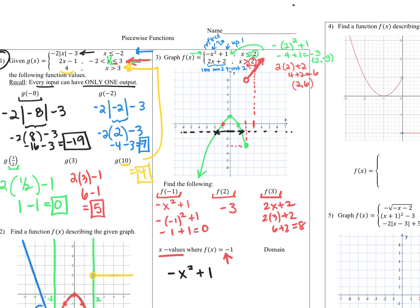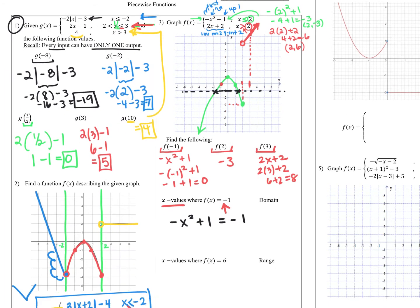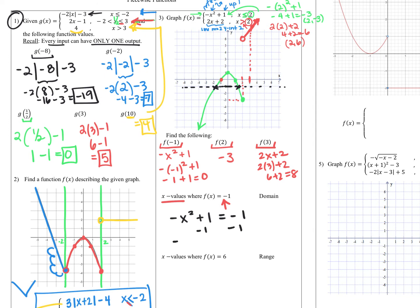Looking at the parabola — negative x squared plus one equals negative one — we subtract one from both sides to get negative x squared equals negative two. Dividing by negative one gives x squared equals two. Square-rooting both sides gives plus and minus the square root of two, which is approximately 1.2. Make sure to include both the positive and negative square root of two.